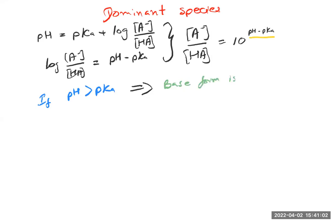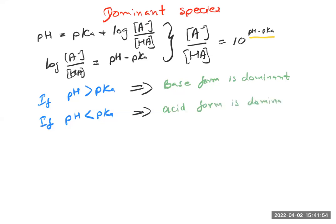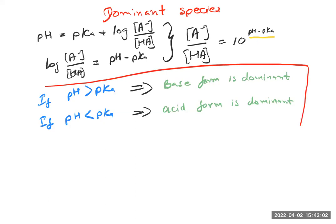On the other hand, if the pH is less than the pKa, then pH minus pKa will be a negative value, meaning we have more of the denominator — more of the weak acid compared to the base form. So if the pH is less than the pKa, the acid form is dominant. That's all we need to determine the dominant species.